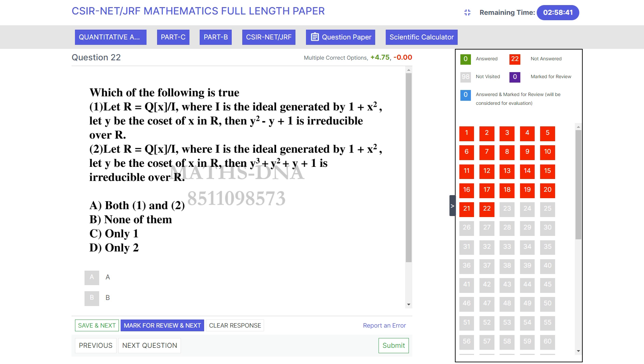Second statement: let R = Q[x]/I, where I is the ideal generated by 1 + x², and let y be the coset of x in R, then y³ + y² + y + 1 is irreducible over R. Which of the following is true?